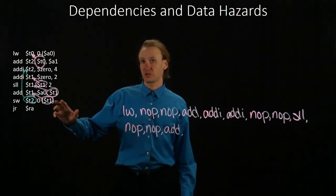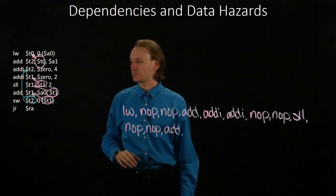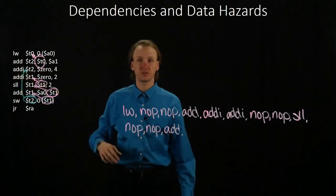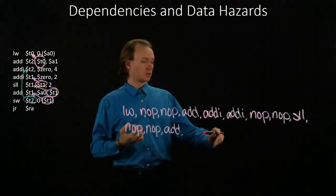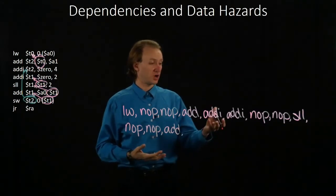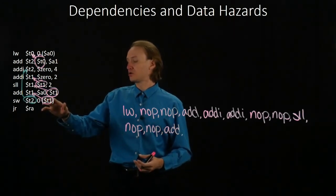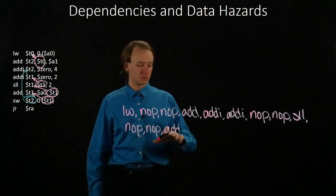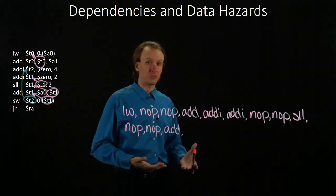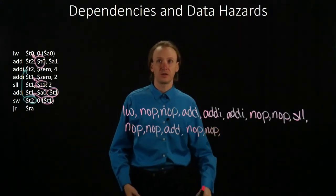Next, we've got the store word instruction. This one is dependent on two of our other instructions: the add immediate as well as the add instruction. I need to wait two cycles after the add immediate instruction is completed before I can get the data from T2. Looking back, I've counted seven cycles since that instruction ran, so that data is available. But I also have to wait two cycles for the address T1 to be computed. Since that was computed in the previous instruction, I'm going to have to wait two more cycles for that data to be available. So I will add two no-op instructions, then I can have my store word instruction.